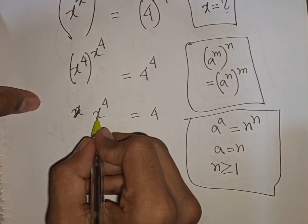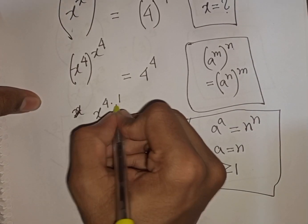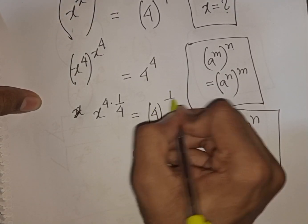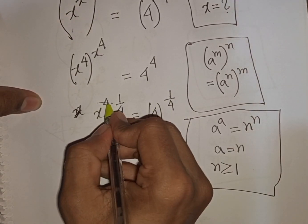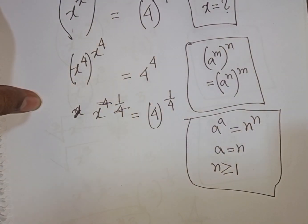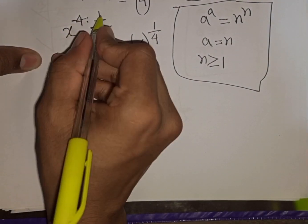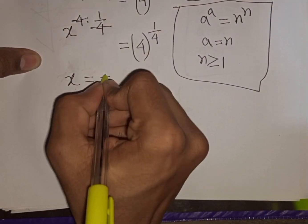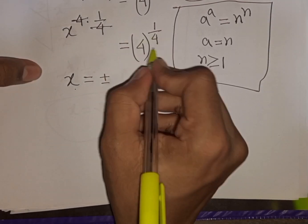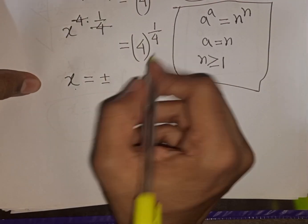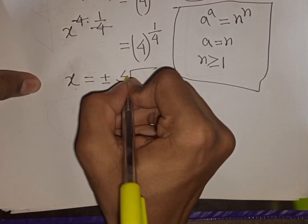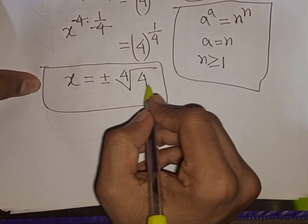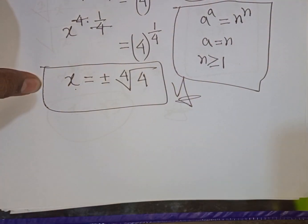Now we raise both sides to the power of 1/4, so the 4 cancels. We get x = ±4^(1/4), which can be written as ±⁴√4. This is the value of x and our final answer.